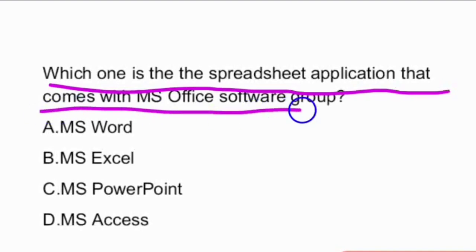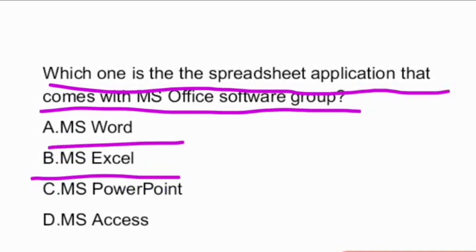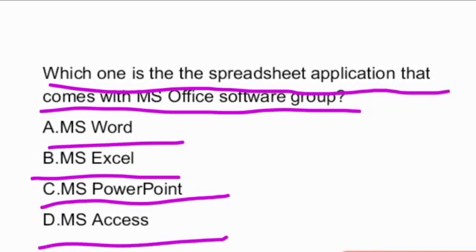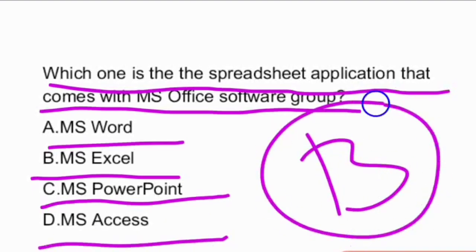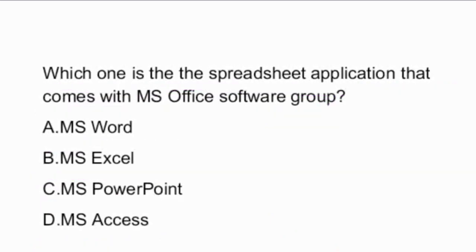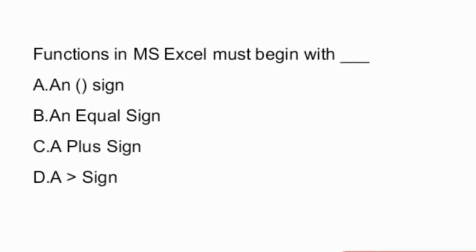The answer for the chart type useful for comparing values over categories is option B — column chart. Next question: which one is the spreadsheet application that comes with MS Office? The options are: MS Word, MS Excel, MS PowerPoint, MS Access.